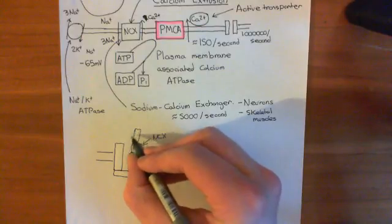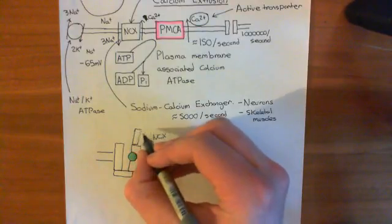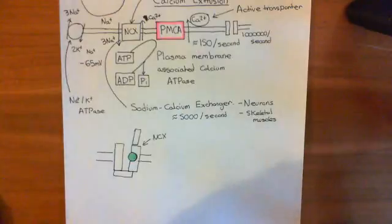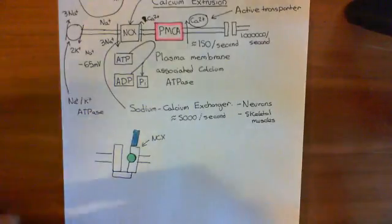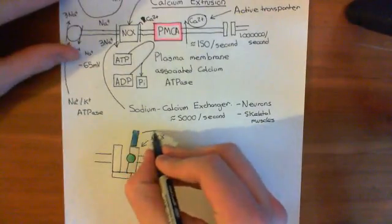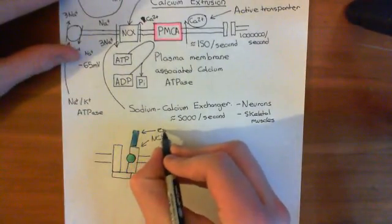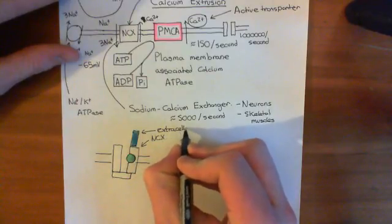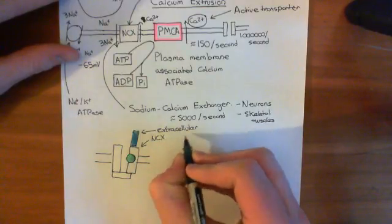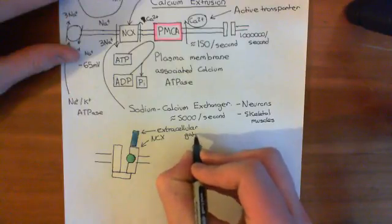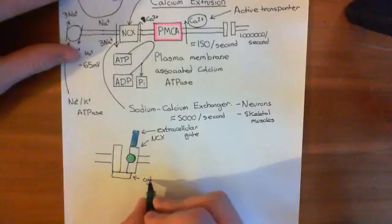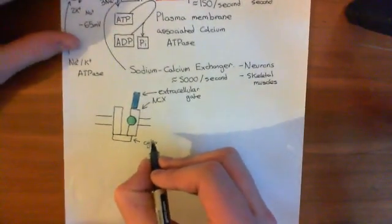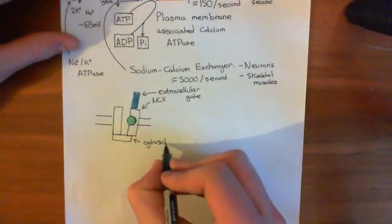The extracellular gate here is open — let me colour this in. This blue gate here is the extracellular gate. And you can also see on this picture that the cytosolic gate is closed. This down here is the cytosolic gate.